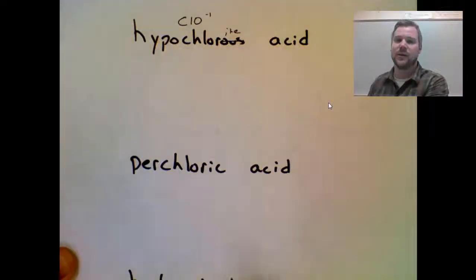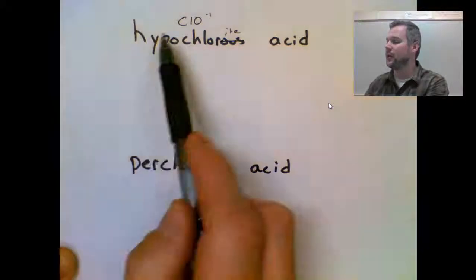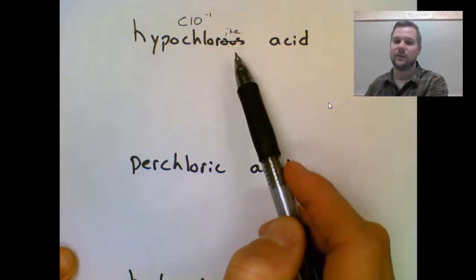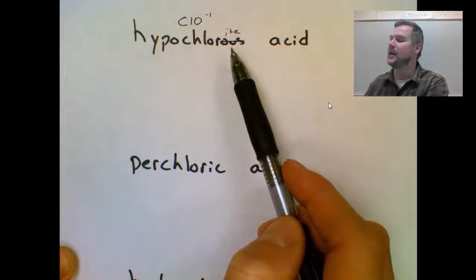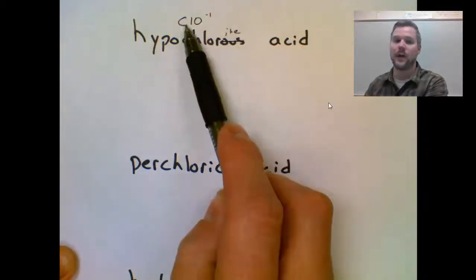So to reiterate what I just did, I took the name, I crossed off the suffix and replaced it with what it came from as an anion. And then I found that anion and I wrote it down with its charge.